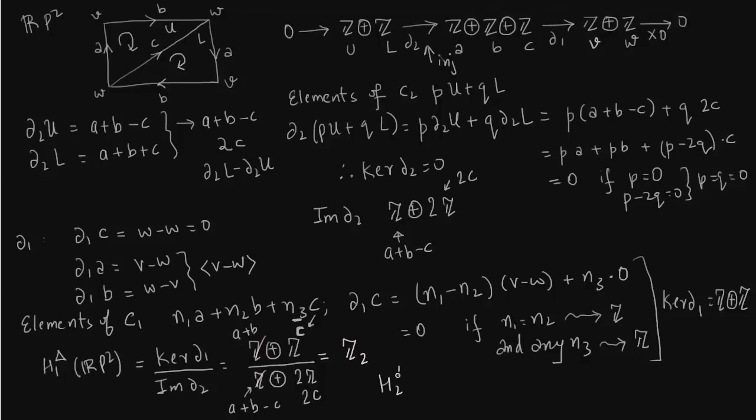Now H2 of RP2 is nothing but kernel of delta 2 because image of delta 3 is always 0. We have seen this is an injective map. So kernel of delta 2 is 0.